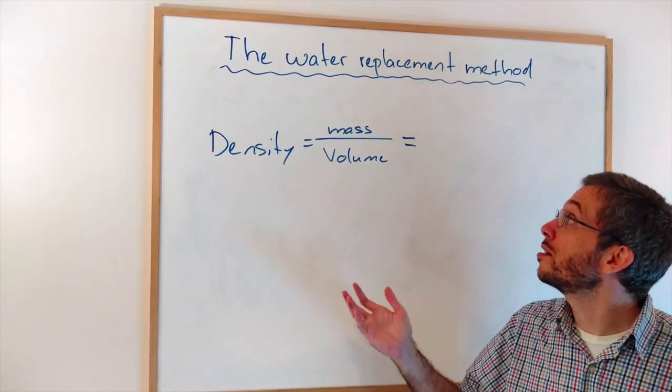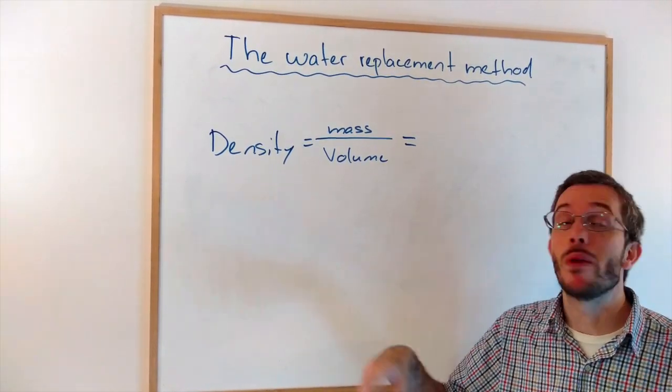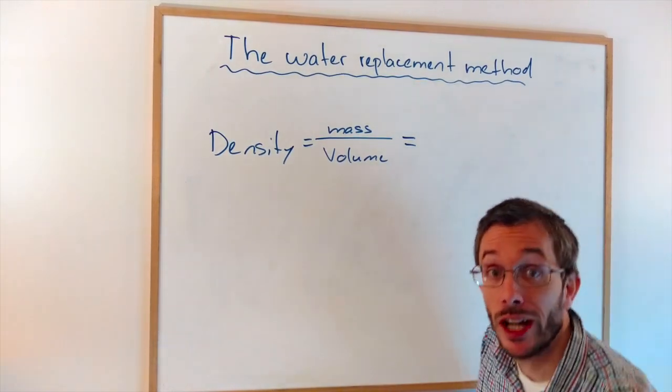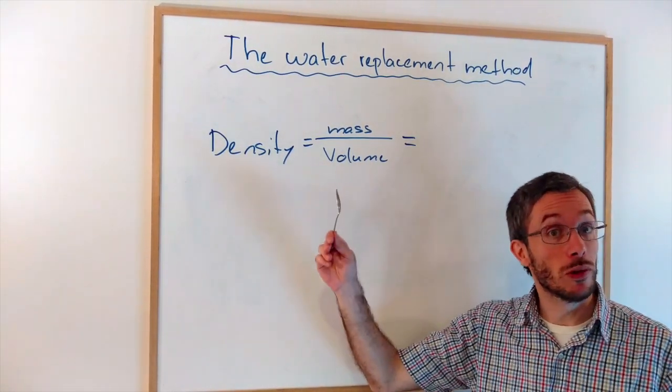The water replacement method is a method that allows us to measure the volume of an object that is oddly shaped, for example, a spoon like this.